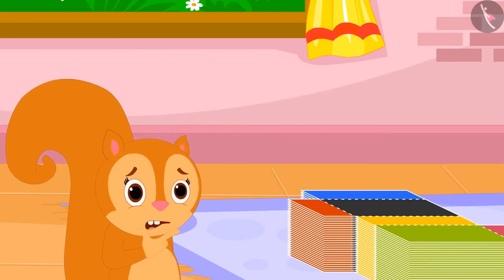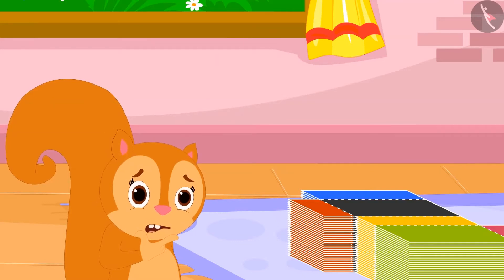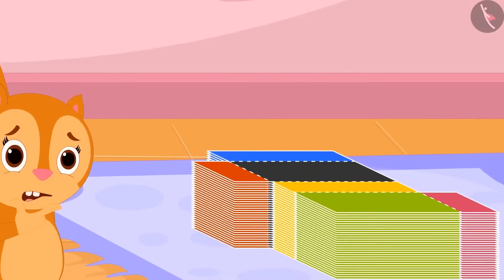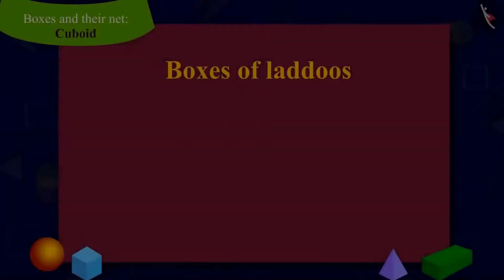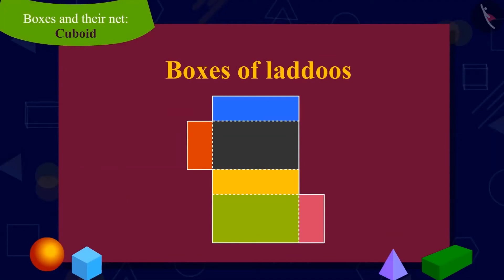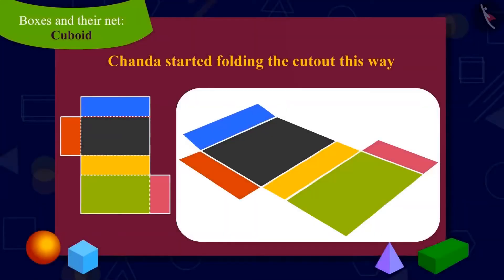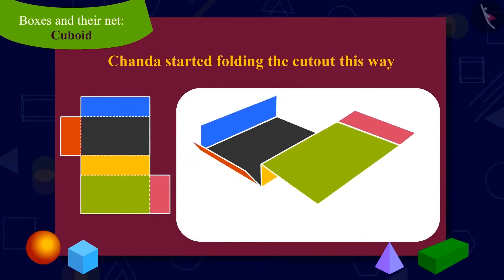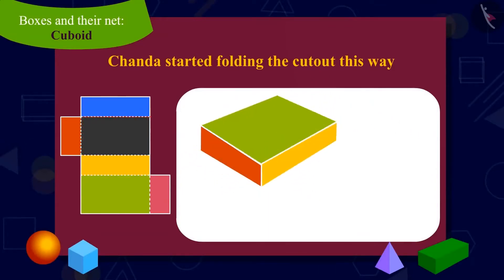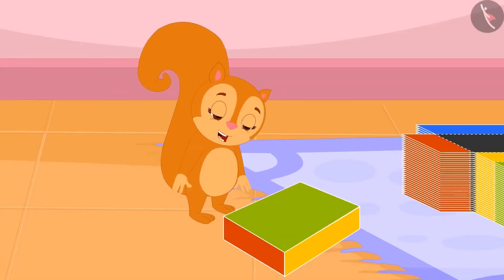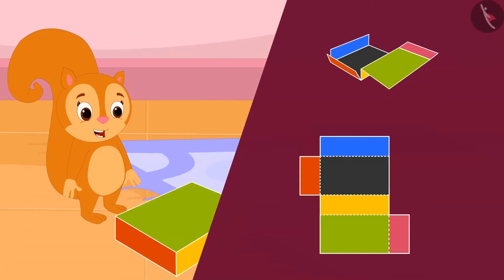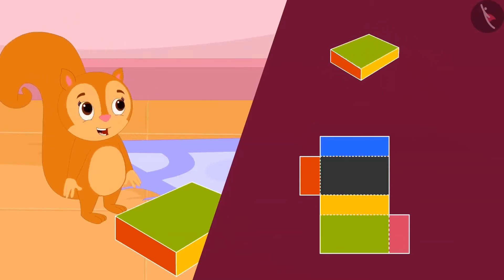Children, are you also wondering like Chanda why Appu said this? Let's see what Appu explains to Chanda. Appu showed Chanda a cardboard cutout. He asked Chanda to fold the cutout on the line with dots on it. Chanda began to fold the cutout in this manner. Chanda couldn't believe her eyes — the laddus box was ready by folding the cutout on those dotted lines.